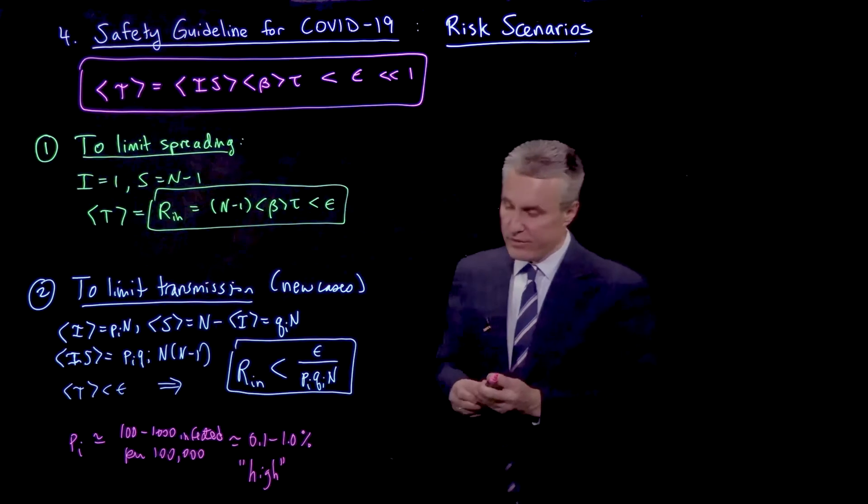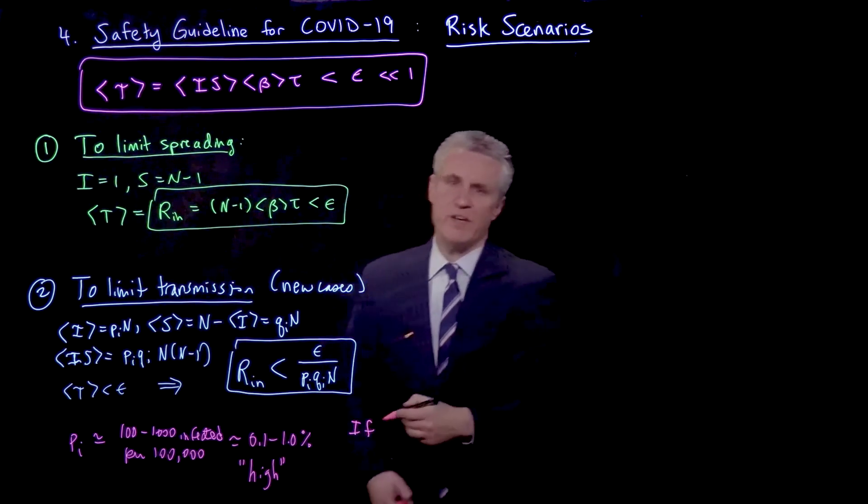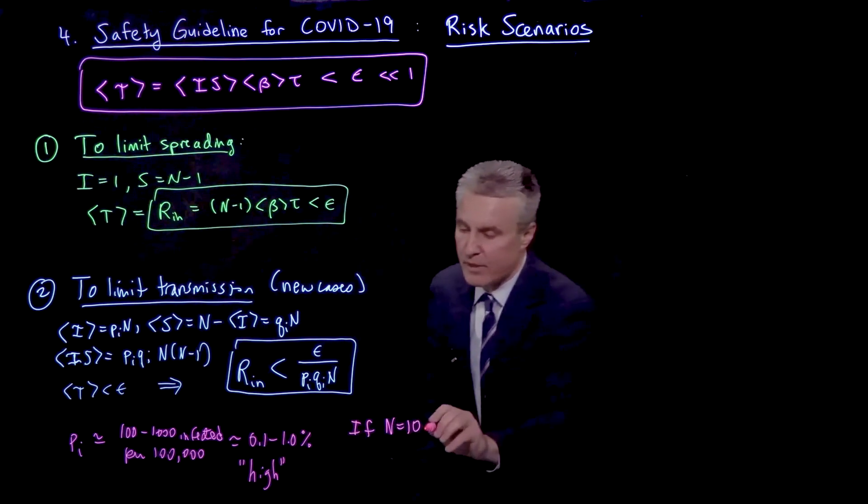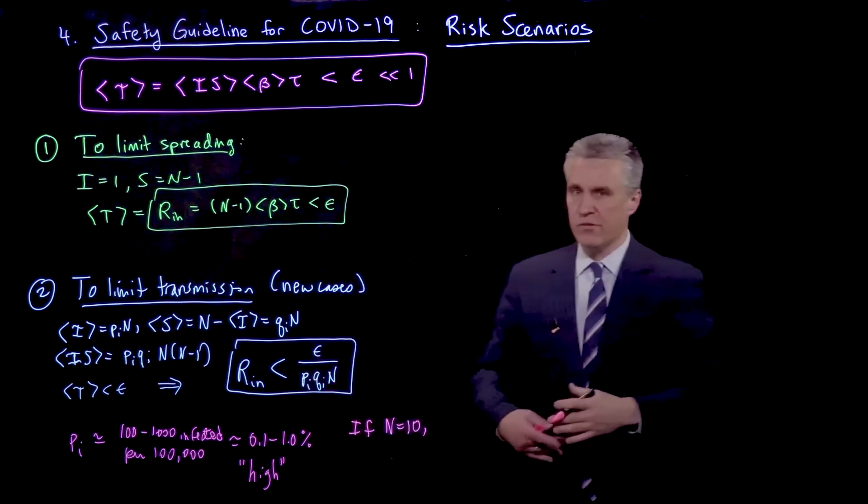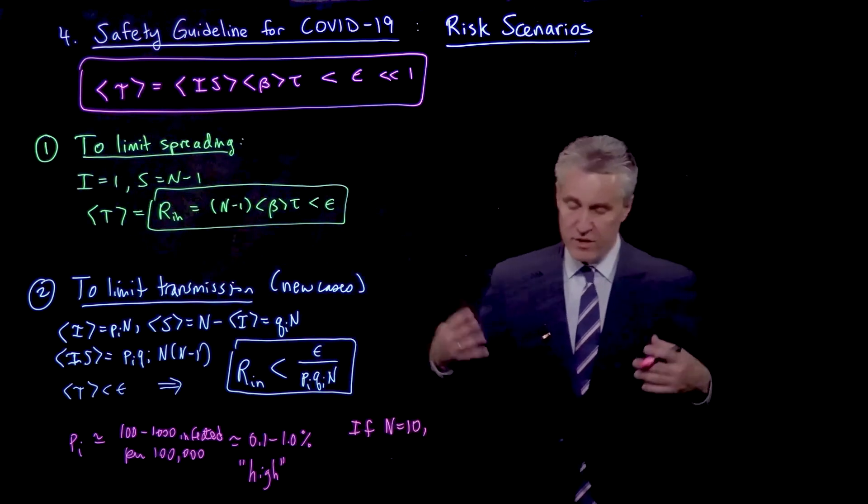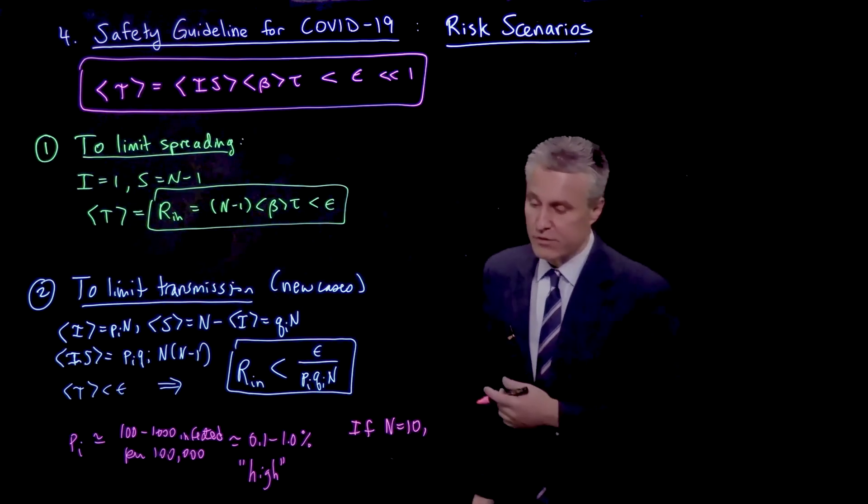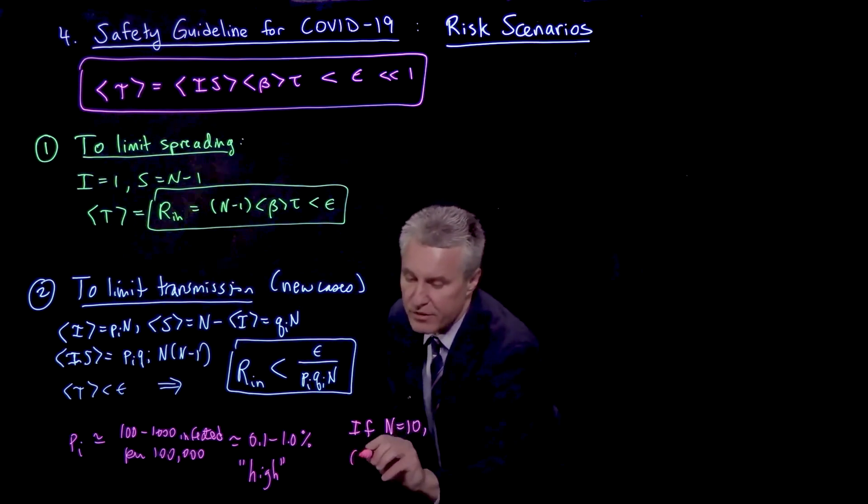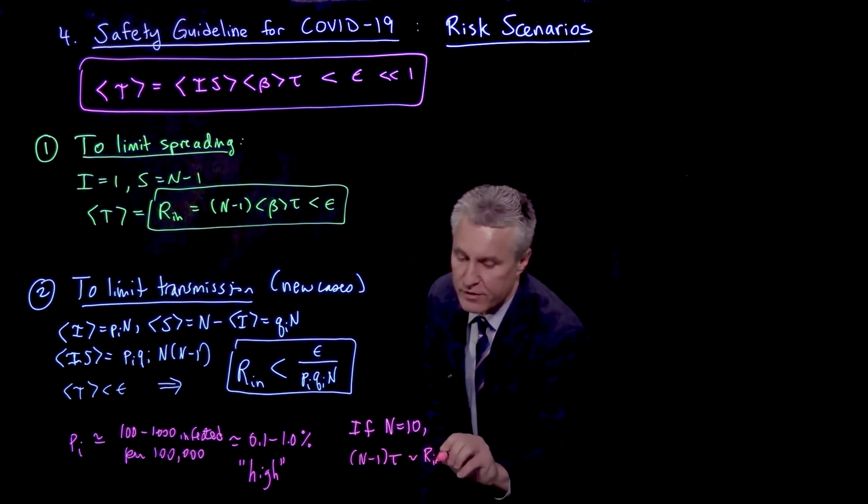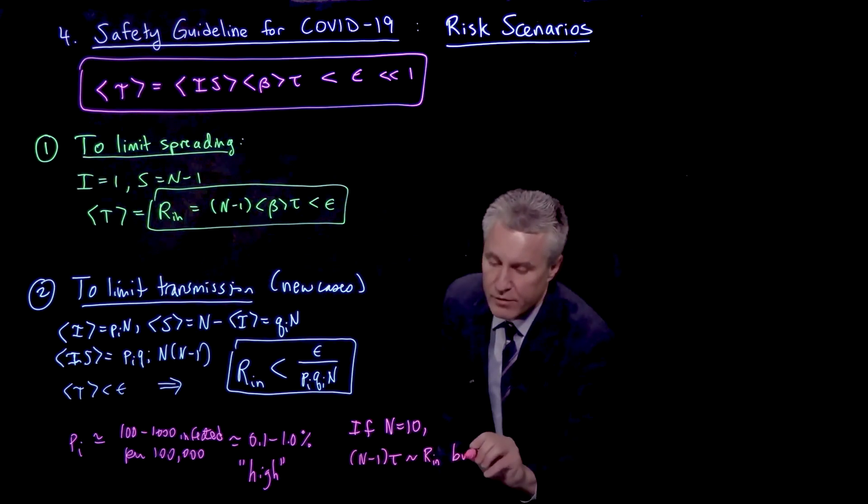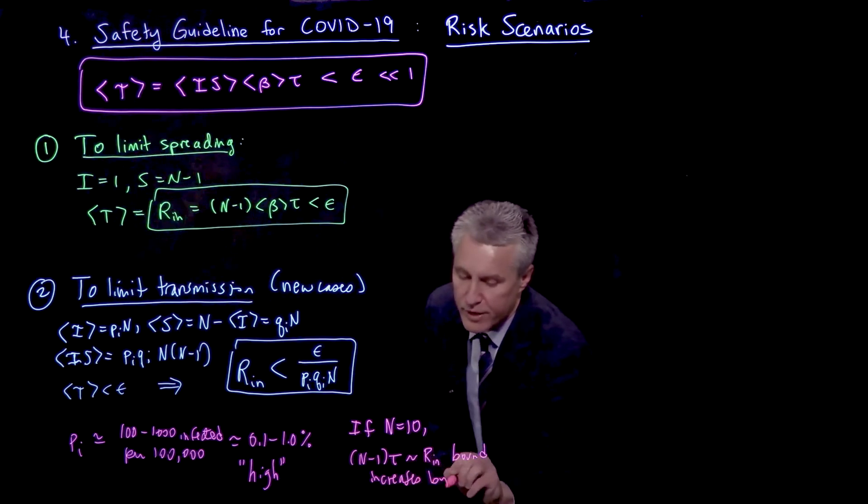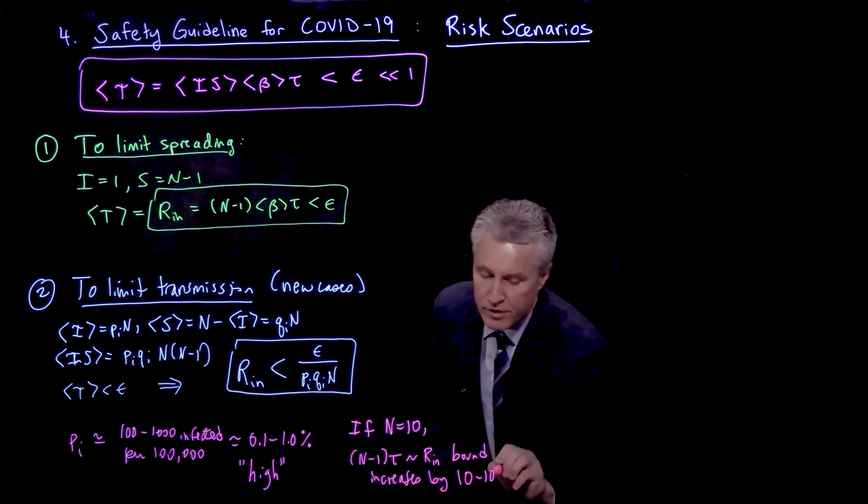But in that case, if let's just say we had a situation with like 10 people in the room, just to give an example, what would this tell us in terms of increasing our time in the room or our occupancy? Well, occupancy is here fixed, but let's say time in the room or ventilation or other factors, we can basically increase our N minus 1 tau, our cumulative exposure time.